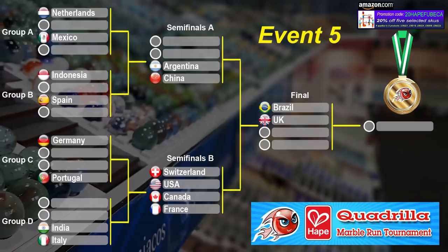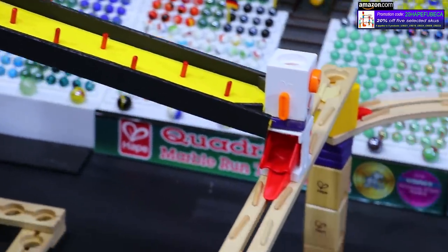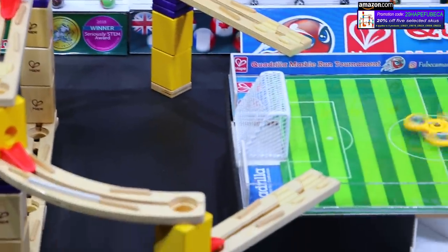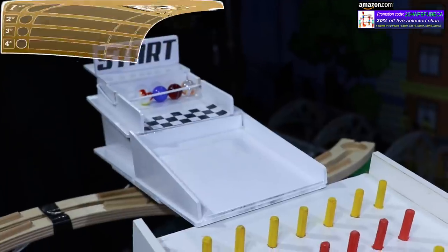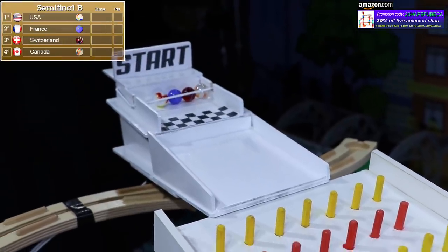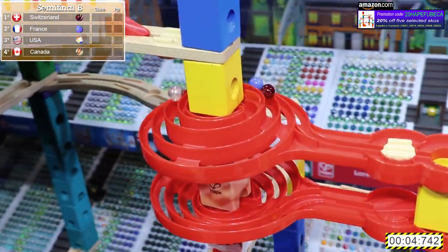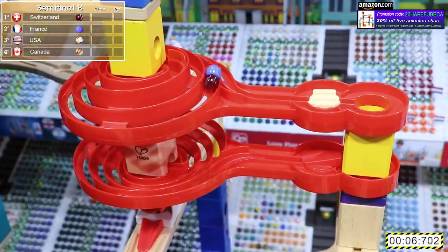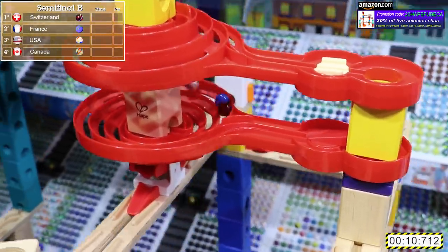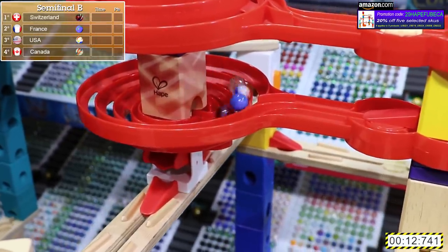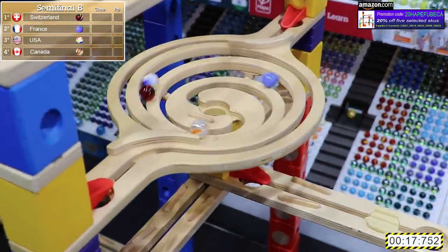Who will they be joined by? As it will be two out of the four teams from semifinal B. They are representing Europe and North America. The US, France, Switzerland, and Canada. Canada right now in a prime position to get into a good spot in the championship run. The US trying to get back in it. They're all very close right now as they make their way down that second funnel. Split off now two and two.